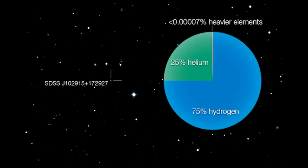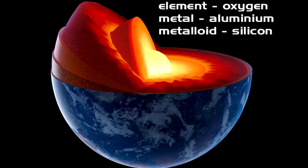The element of the universe is hydrogen at 75%, second position is helium. In the earth's crust: oxygen is first, aluminum is the most abundant metal, and silicon is second.